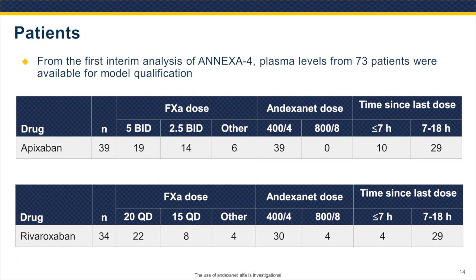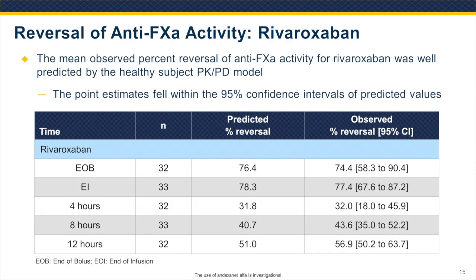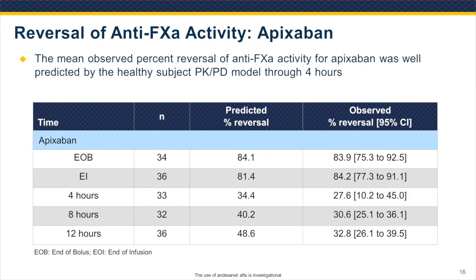We used the first interim analysis from Annexa-4, with plasma levels available from 73 patients — 39 taking apixaban and 34 taking rivaroxaban. For rivaroxaban, the mean observed percent reversal of anti-factor Xa activity was well predicted by the healthy subject PKPD model from the end of the bolus through 12 hours, with point estimates falling within the 95% confidence intervals for all values. For apixaban, the mean observed percent reversal was well predicted at the end of the bolus, the end of the infusion through 4 hours, and was slightly lower than predicted at the 8- and 12-hour time points.